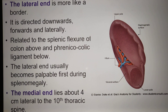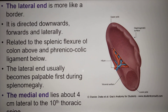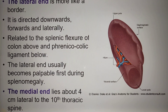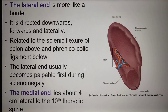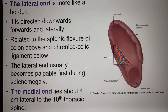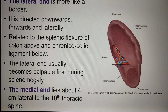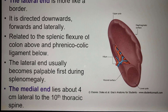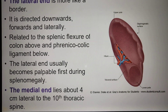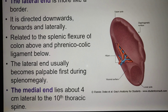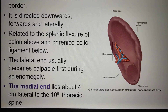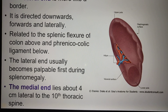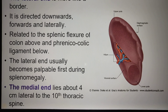The lateral end is more like a border; it is directed downwards, forwards, and laterally. It is related to the splenic flexure of the colon above and the phrenicocolic ligament below. The lateral end usually becomes palpable first during enlargement of the spleen, which is called splenomegaly.